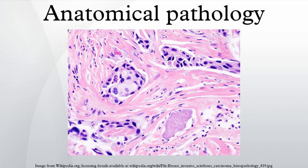Immunohistochemistry involves the use of antibodies to detect the presence, abundance, and localization of specific proteins. This technique is critical for distinguishing between disorders with similar morphology, as well as characterizing the molecular properties of certain cancers.